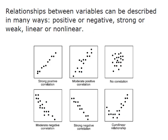When we're describing the relationship between variables, there are many ways we can describe that relationship. They can be positive, negative, strong, weak, linear, or nonlinear. When we're talking about a strong positive correlation, we're talking about a rise in a fairly clustered group. When we look at a more moderate correlation, you're going to see it's moderate because we have more distance between our observations and that trend line.